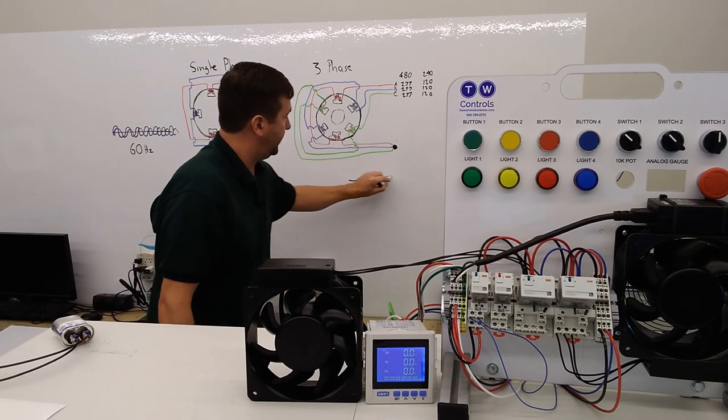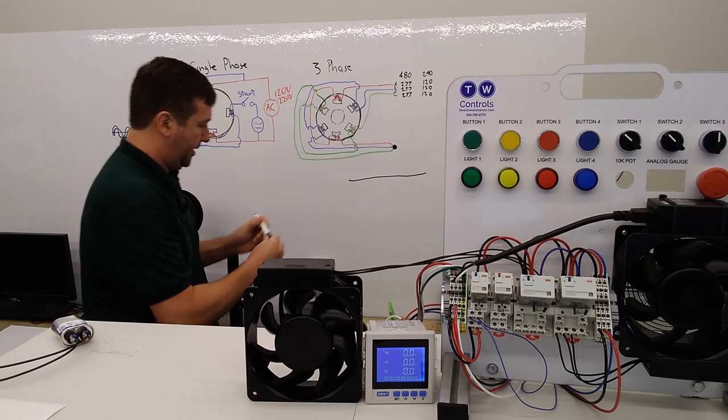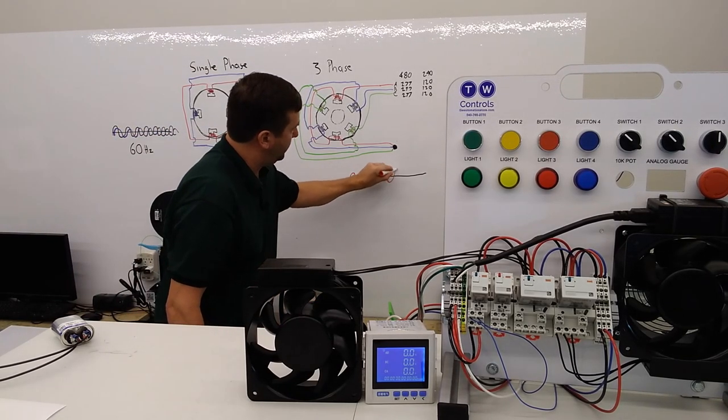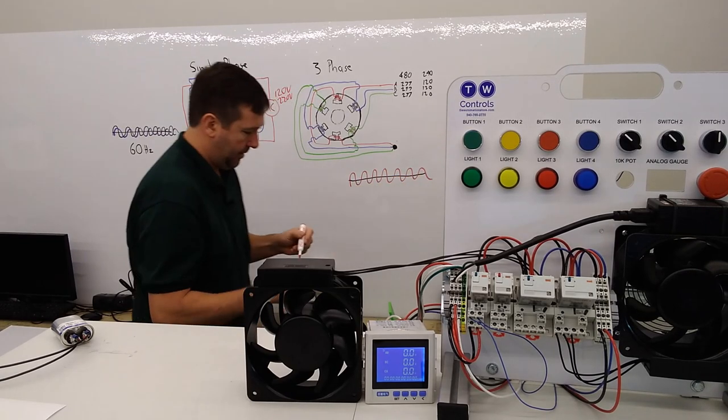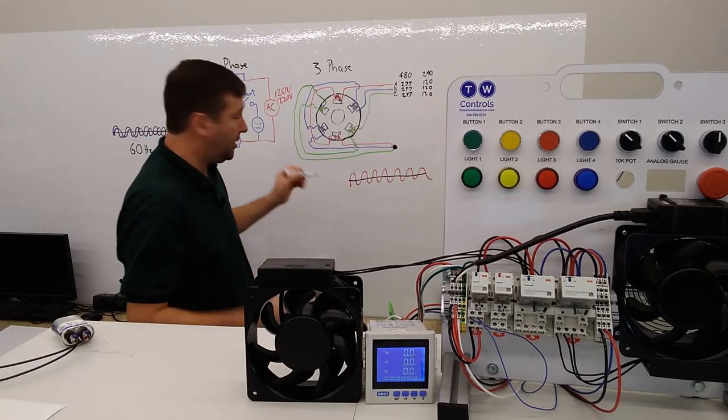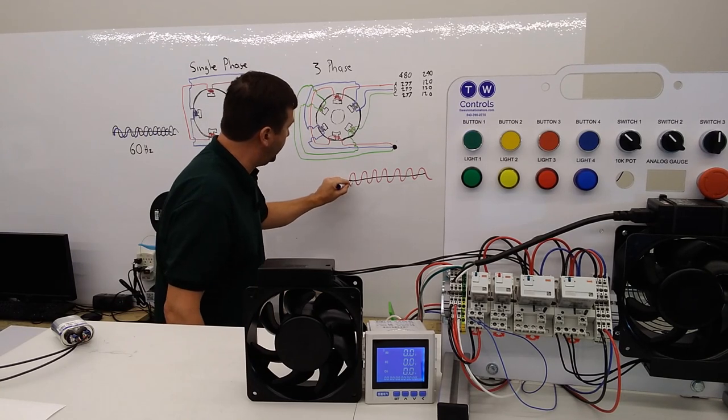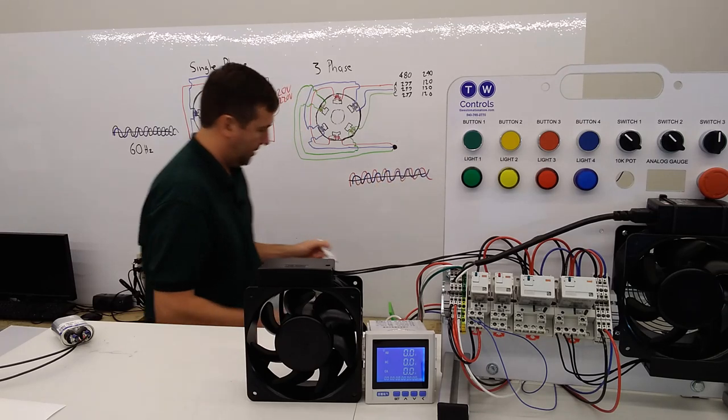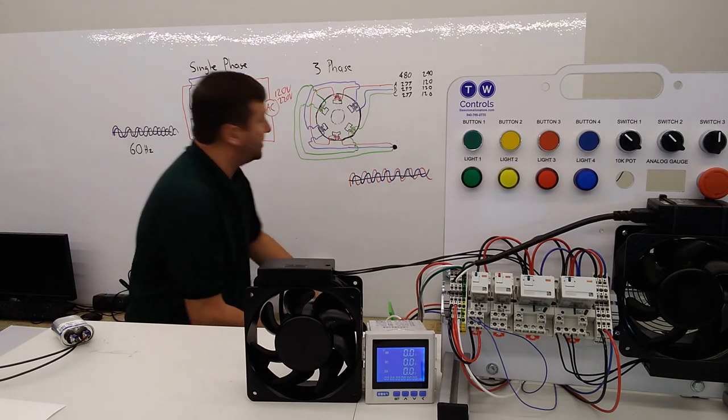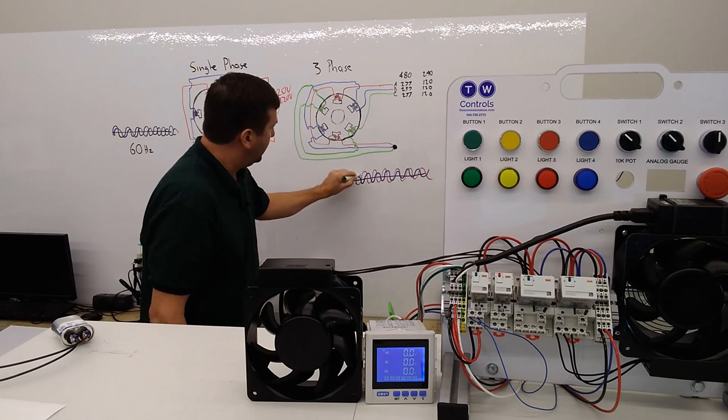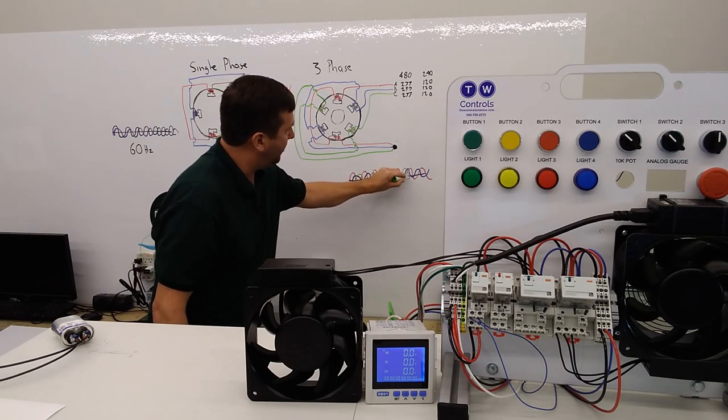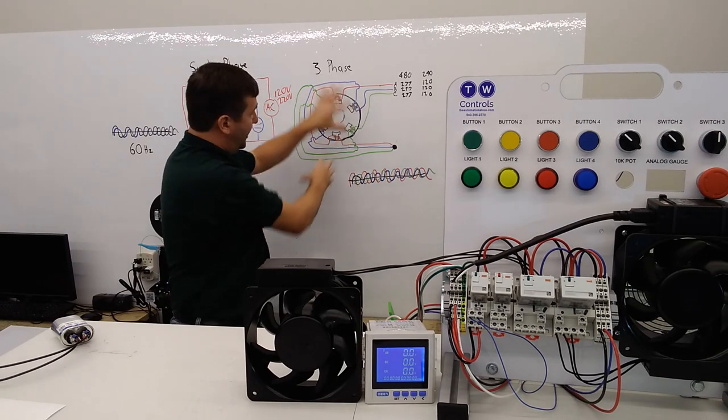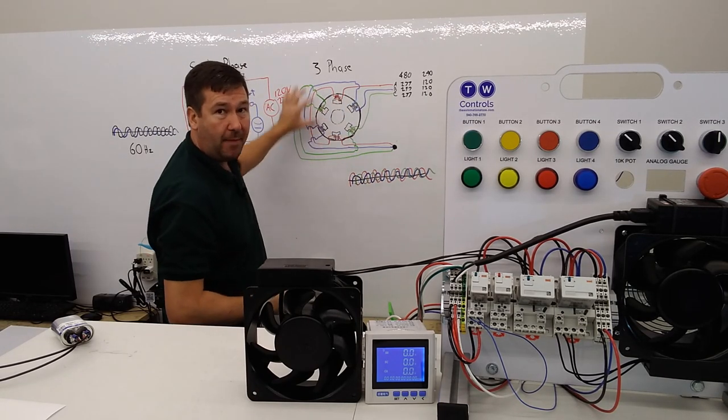So then when you power it again, here's our zero line. We have phase A, which is going to be a sine wave. Then you have phase B, and this is going to be 120 degrees out of alignment with phase A. And then you're going to have phase C, and it's going to be an additional 120 degrees out. And this, by being 120 degrees out, is making a rotating magnetic field.